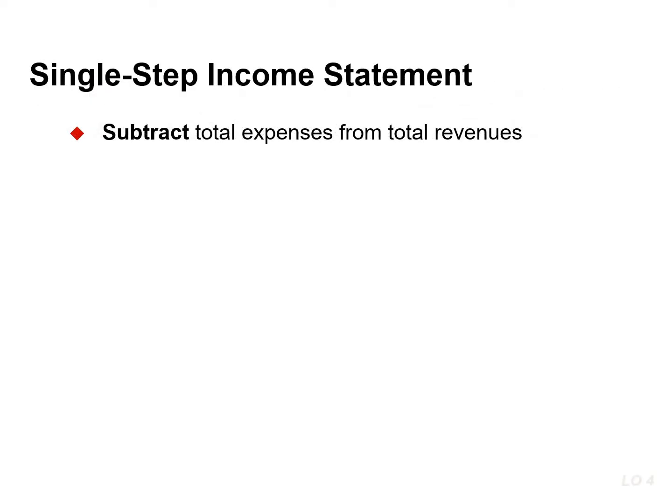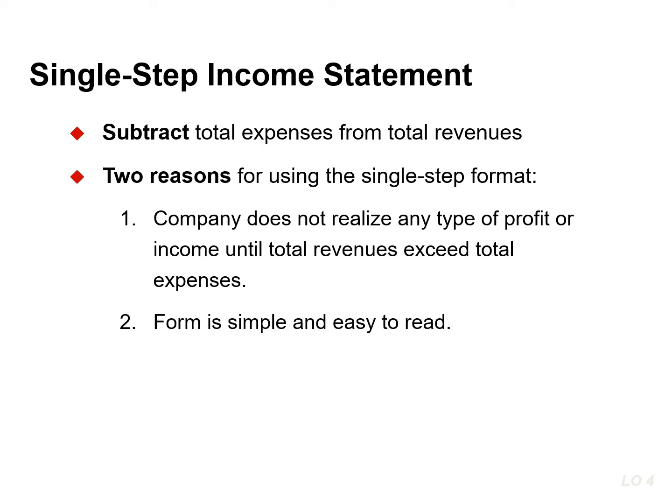Companies widely use two forms of the income statement. One is the single-step income statement, so named because only one step — subtracting total expenses from total revenues — is required in determining net income or net loss. There are two primary reasons for using the single-step form: a company does not realize any profit until total revenues exceed total expenses, and the form is simple and easy to read.